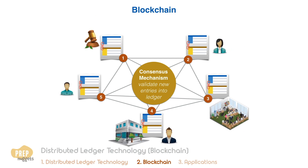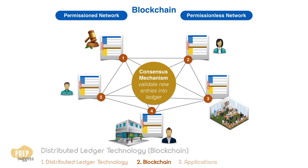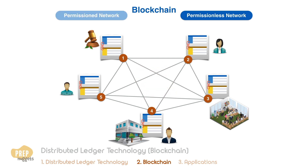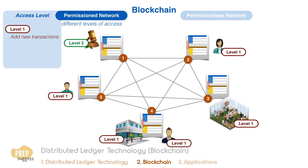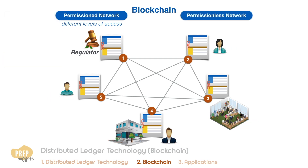Distributed ledgers or blockchains can take the form of permissioned or permissionless networks. In permissioned networks, users have different levels of access — for example, participants may add new transactions while government regulators have permission to view all transaction history. In permissionless networks, all network participants — not just regulators — can view all transactions.